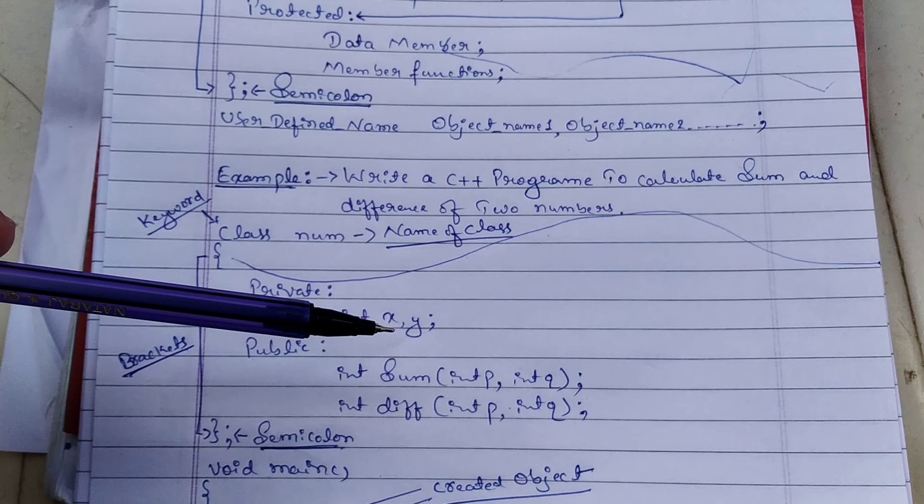Lastly, in the main function, I have mentioned the class name for object creation. I've created two objects: s1 and s2. These are the object declarations.